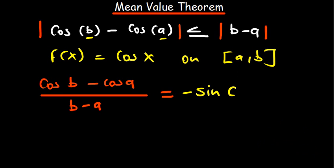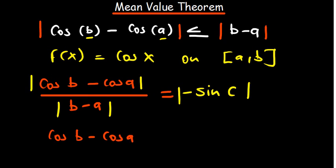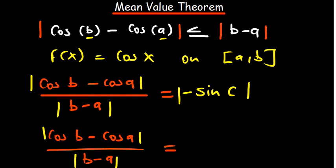At this point we can introduce the absolute value on both sides — left hand side and right hand side. Where it is negative it is going to become positive, so we have the absolute value of cosine b minus cosine a, divided by b minus a, equal to the absolute value of sine of c.